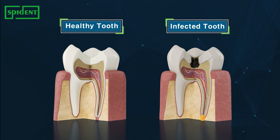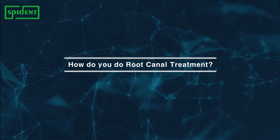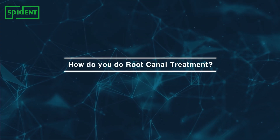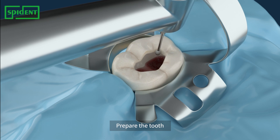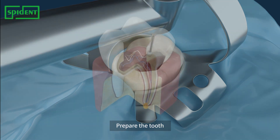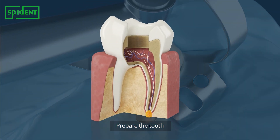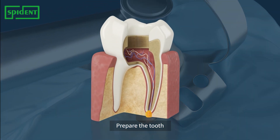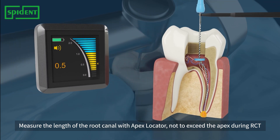Root canal treatment is performed to save the tooth — to remove the pulp and protect the tooth so it can continue to do its job. To begin, open up the pulp chamber and remove the caries, then measure the depth of the root canal so you do not go over the apex during treatment.